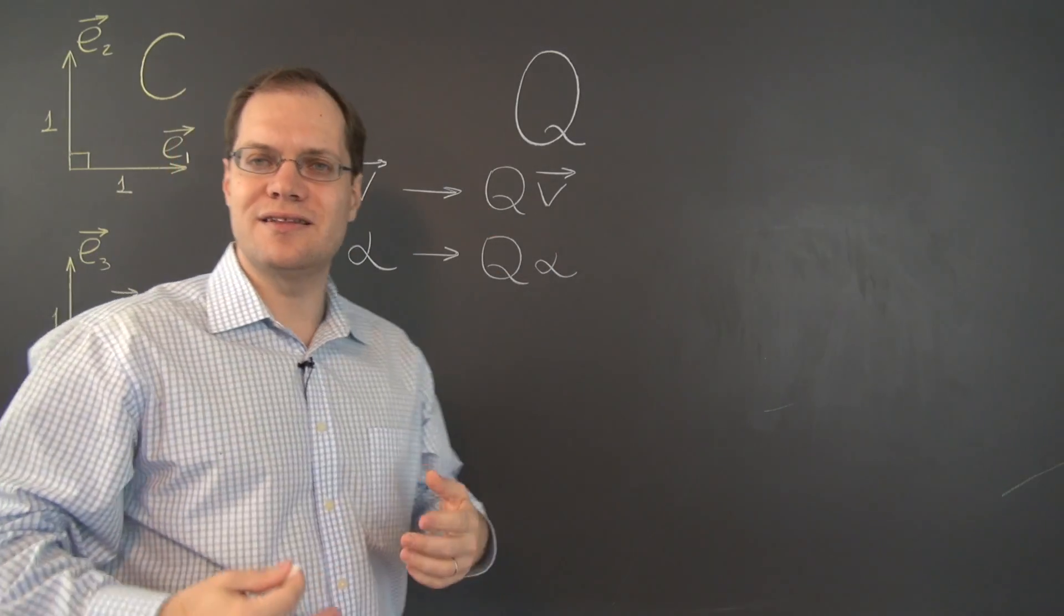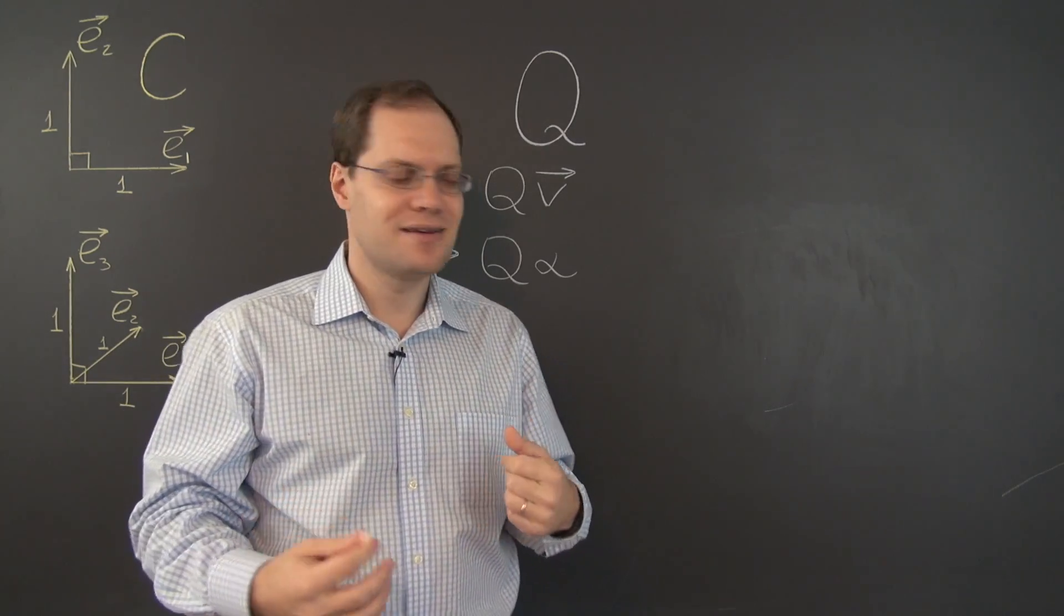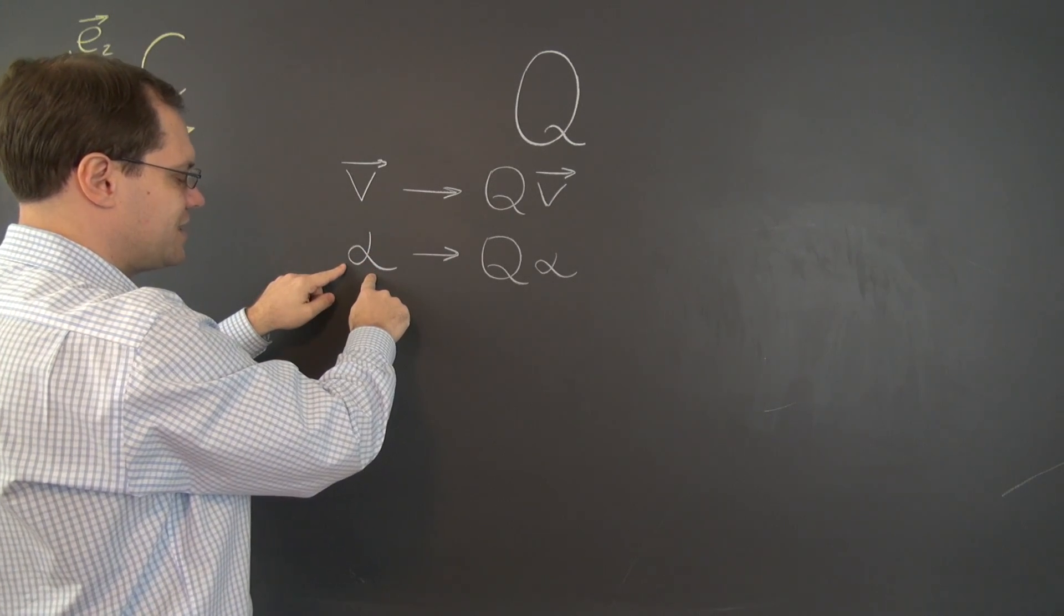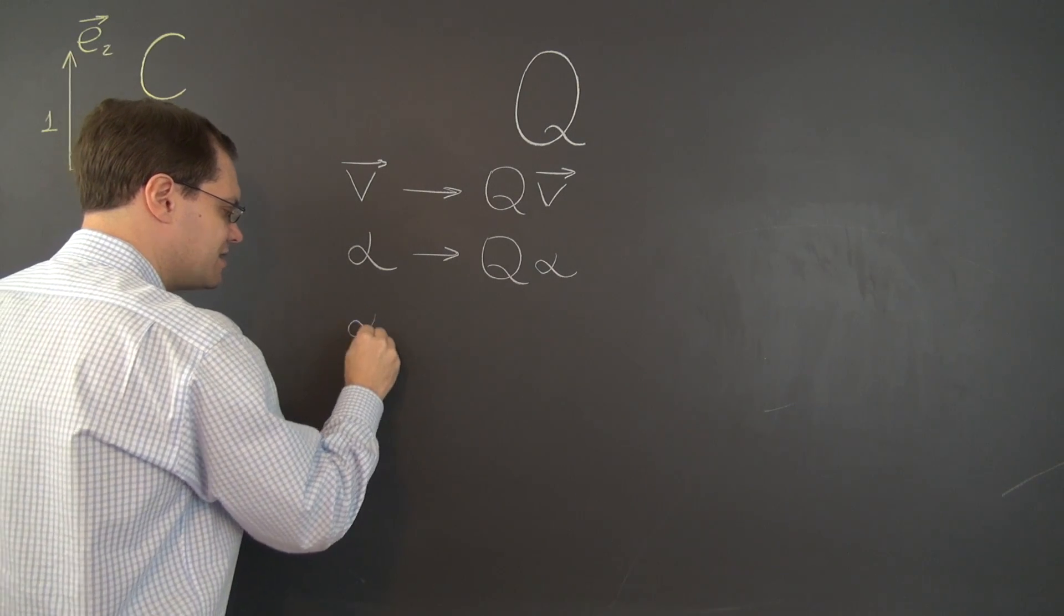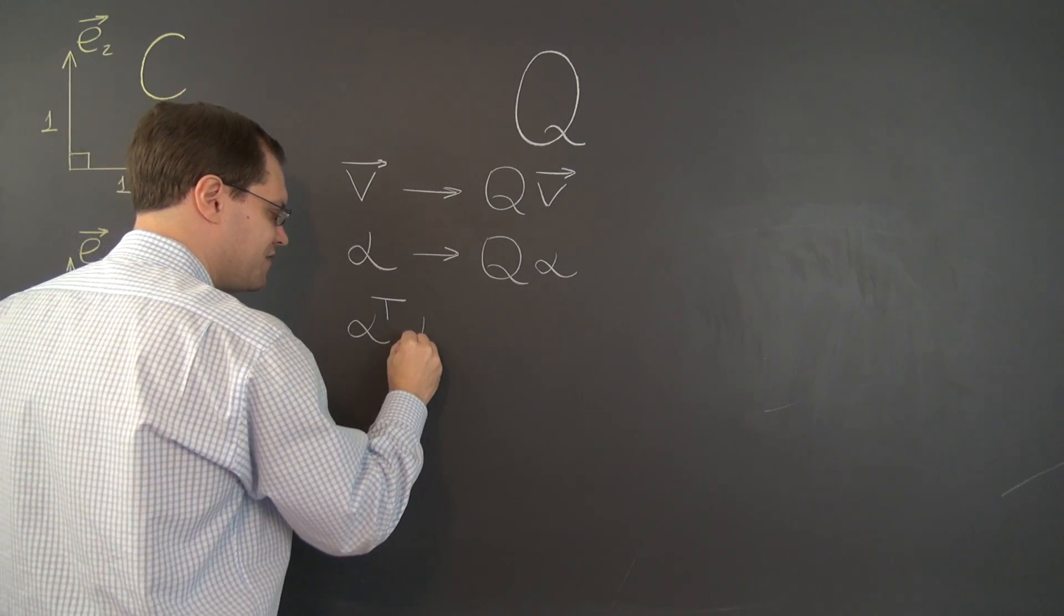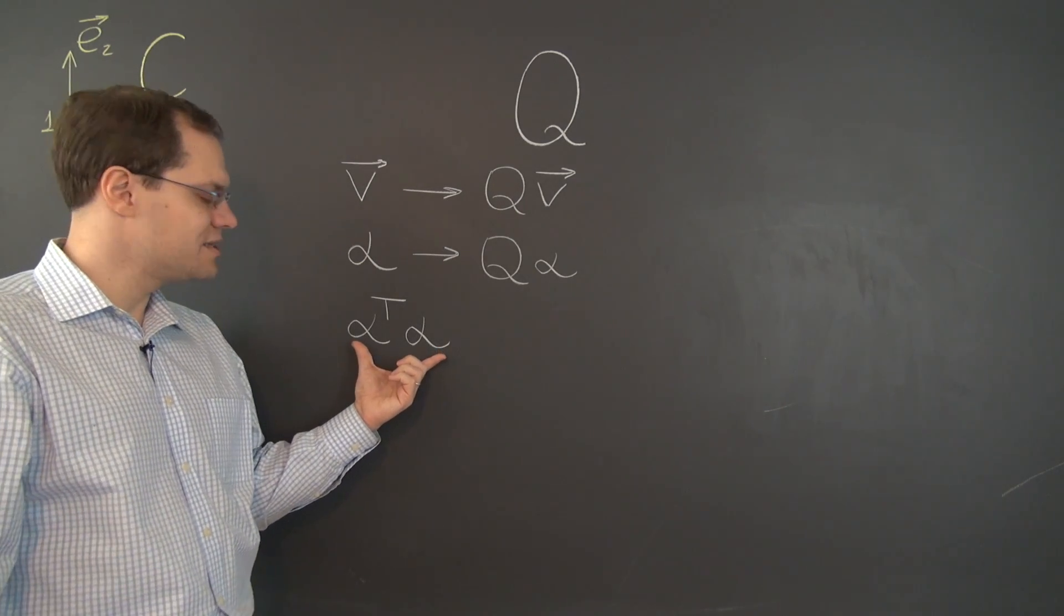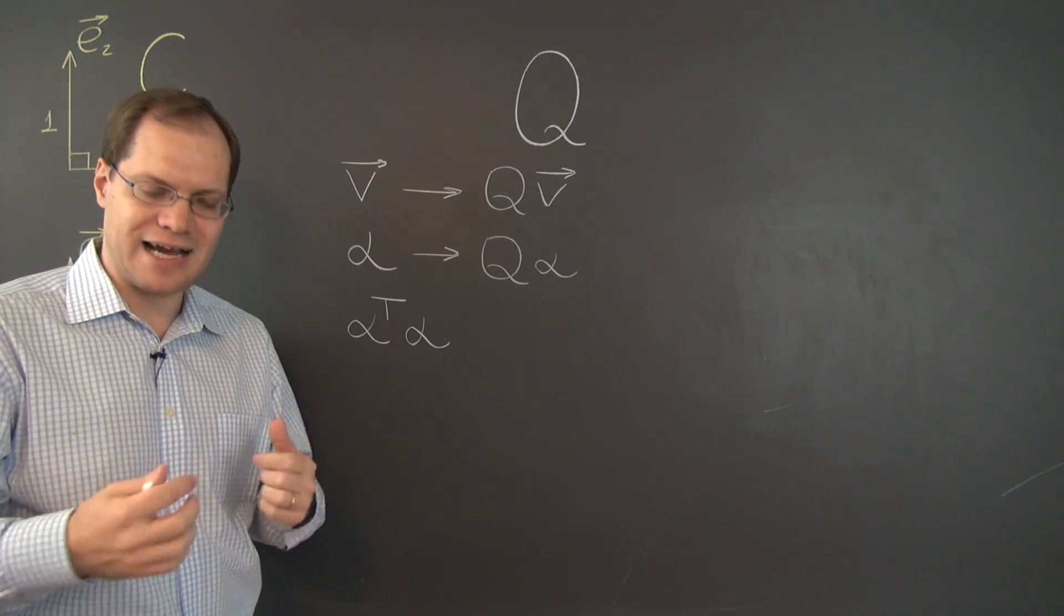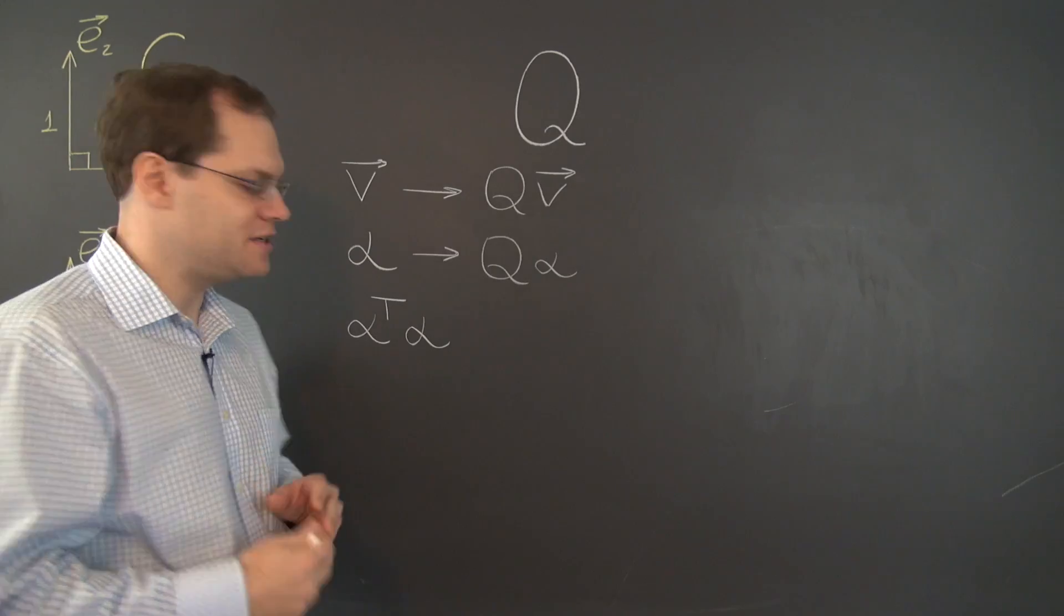Now let's express the equality of lengths in component space. The length of V, V being represented by the vector alpha in component space, its length squared is alpha transpose alpha. That's why I was so excited when we came up with this expression in the language of matrices, because now we have the entire power of the matrix machinery at our disposal.